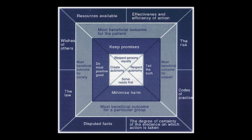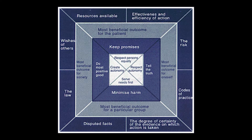The next layer pushes us to think more broadly. We need to consider not just the most beneficial outcome for the patient, but also for the family. For example, it's one thing to talk about feeding tubes for a critically ill baby, but the family may have no idea how to manage the technology or be able to afford the tube feed itself. So what's going to be beneficial for the whole family?